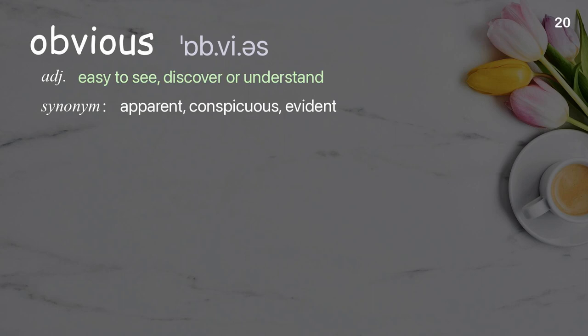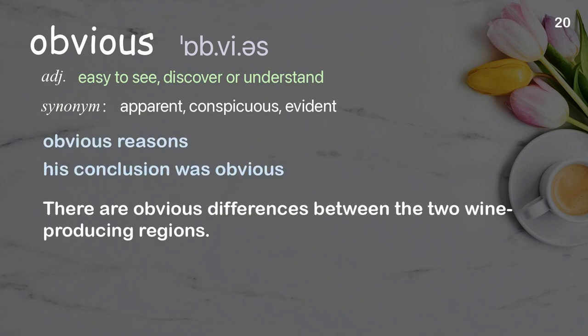Obvious: easy to see, discover, or understand. Examples: obvious reasons, his conclusion was obvious. There are obvious differences between the two wine-producing regions.